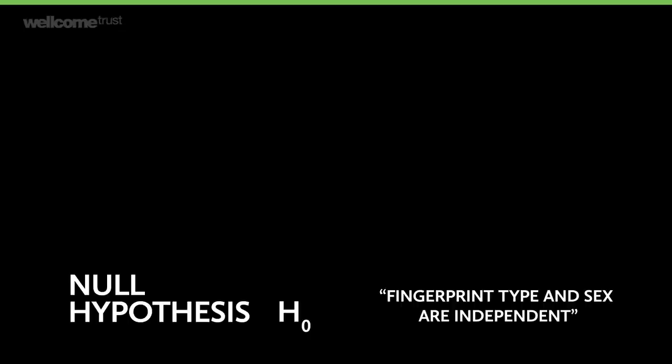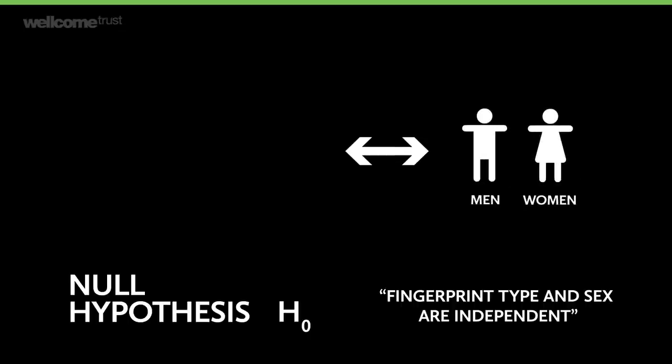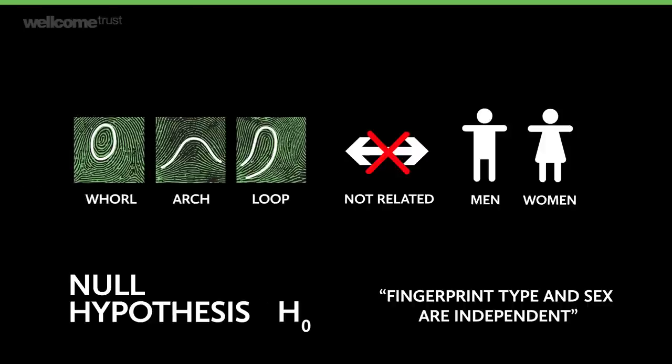The first thing we'll do with any statistical test is set up the hypotheses — the conclusions we can draw from the experiment. There are two for the chi-squared test. The first, the null hypothesis, is our default answer: that the variables are independent. In this case, the null hypothesis is that knowing someone's sex doesn't tell us anything about how likely they are to have a particular fingerprint type, and vice versa. This is the conclusion we'll draw unless we have strong evidence to the contrary.